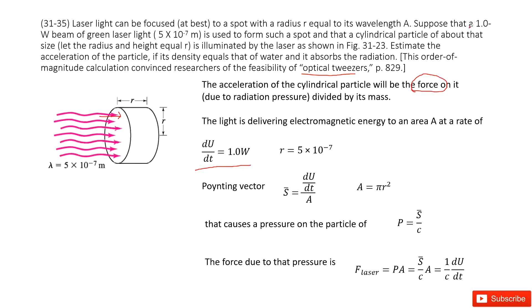This is dU/dt, which is the power. The second quantity is r. This distance is given as 5 × 10^-7 meters. We need to write meter there; I missed it.